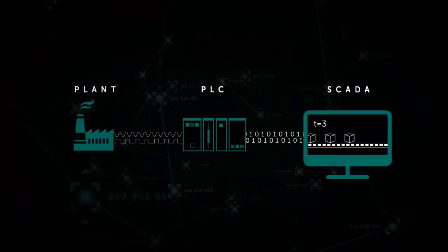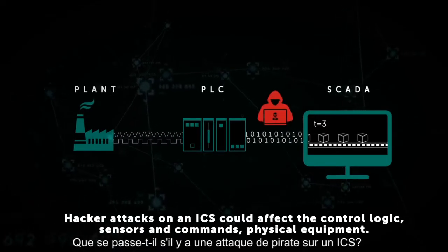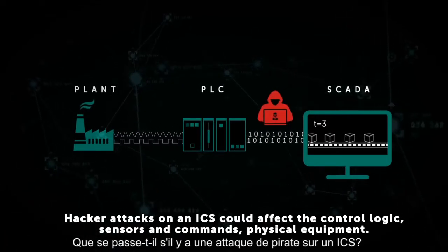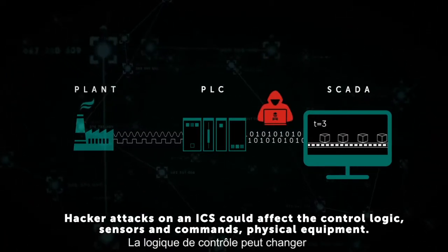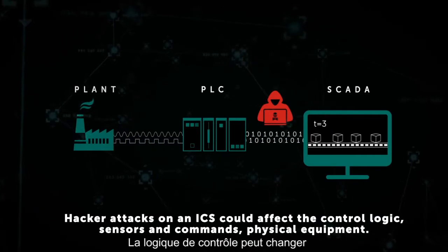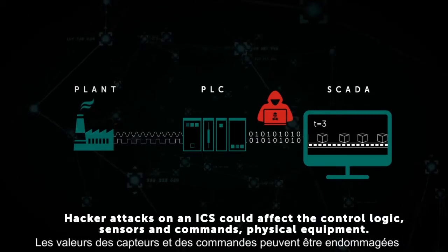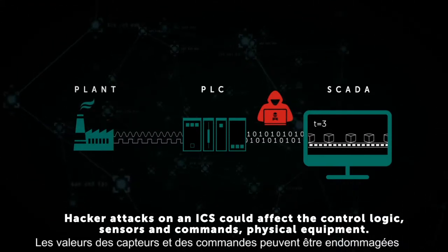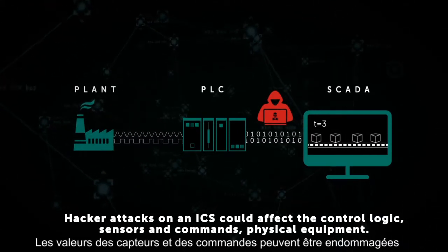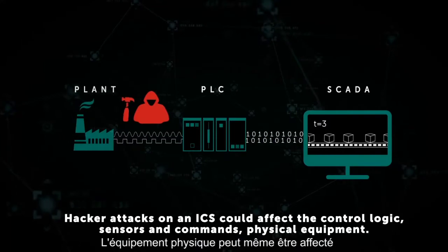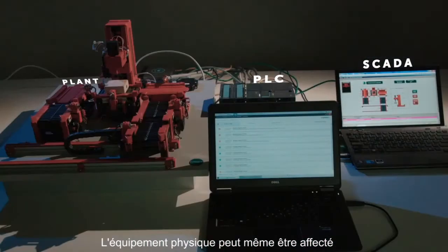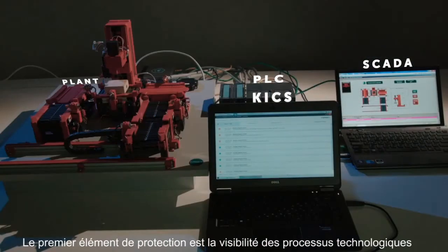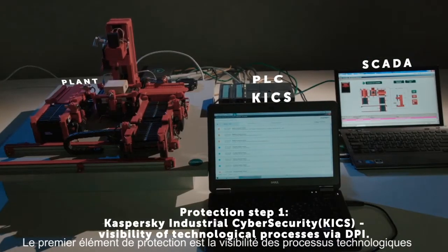What happens if there's a hacker attack on an ICS? Control logic can be changed. Sensor and command values can be corrupted. Physical equipment can even be directly affected. The first element of protection is visibility of technological processes.